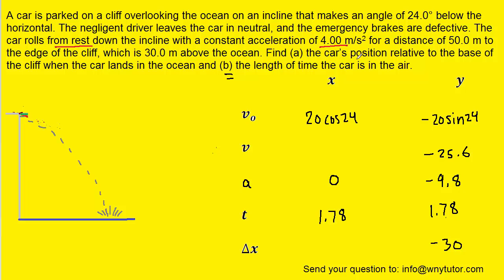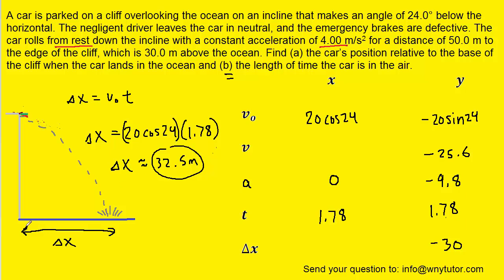For part a of the question, we are being asked to find the position relative to the base of the cliff. So if we go back to the picture, we're essentially being asked to calculate this displacement here. That's along the x direction, so we're going to use information from the x portion of our table. We'll consider the following formula. Now as noted earlier, in the x direction the acceleration is zero, so that's going to knock away this entire term. Then we can plug in the known values for the initial velocity and the time, again from the x direction. When we simplify that, we get approximately 32.5 meters for the displacement from the base of the cliff.